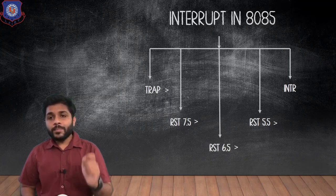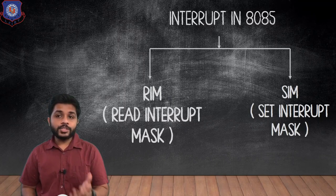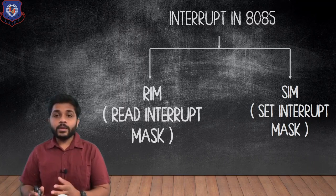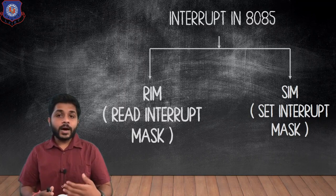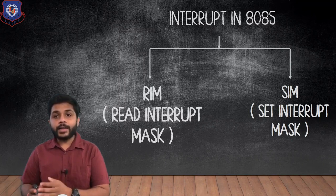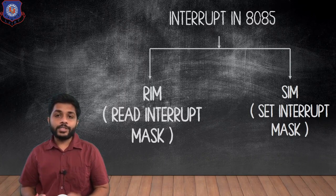To mask and unmask interrupts we use the instruction SIM, and to read the status of interrupts — which are pending and which are in process — we use the instruction RIM, which stands for Read Interrupt Mask.